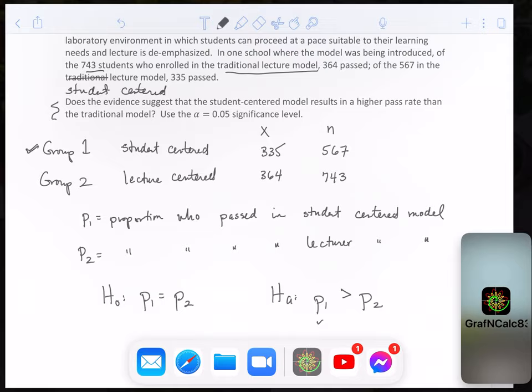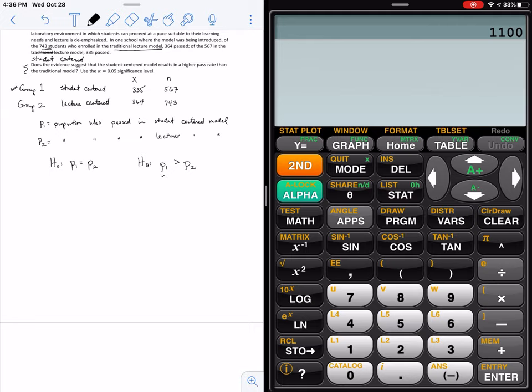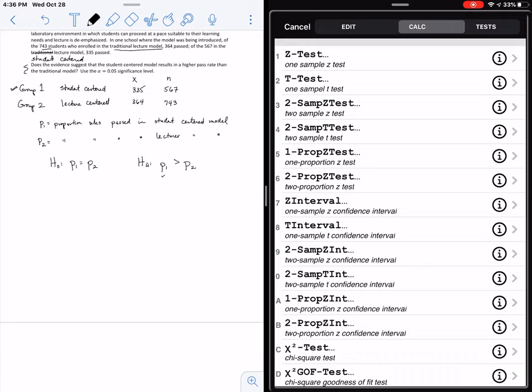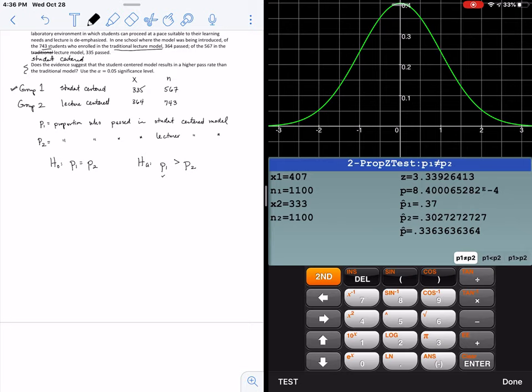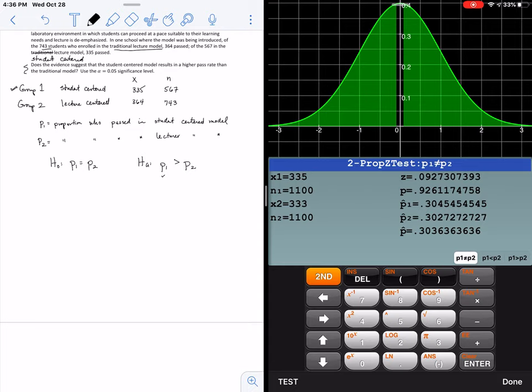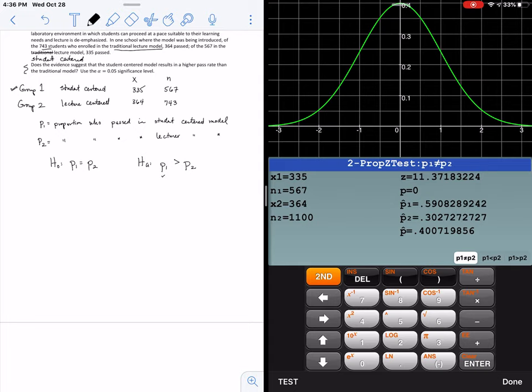So let's go ahead and perform a hypothesis test using technology. So let's move this over here. And let me just go ahead and start over. Remember, we need stat. We want tests. We want two proportion Z test, number 6. And let's go ahead and enter. So group 1, I have 335 successes, out of 567. In group 2, I have 364, out of 743. And we are trying to see greater than.